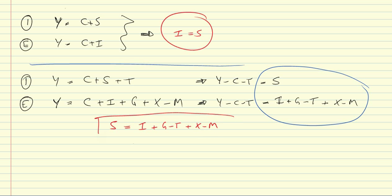That's an important condition. What does that mean? First, this savings on the left-hand side are private savings. So that is what is saved by business and households in the domestic economy.